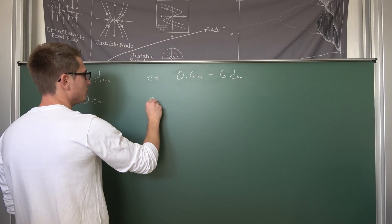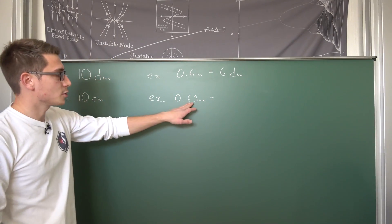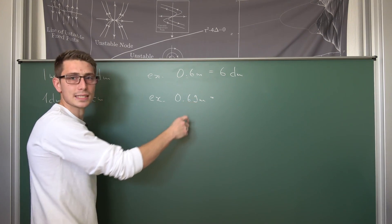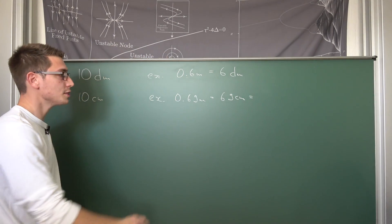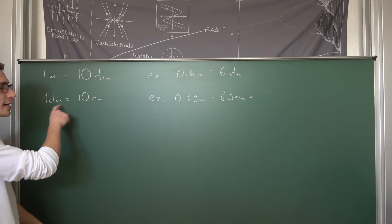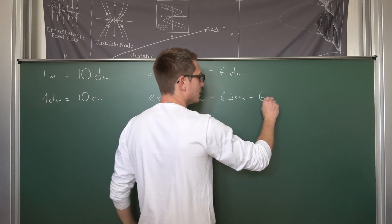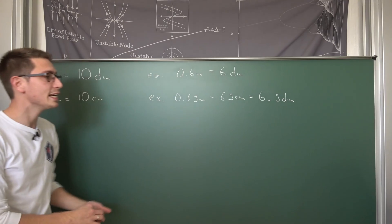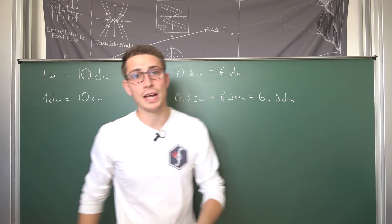For example, if you want to convert 0.69 meters, you know those are just 69 centimeters. We have 100 centimeters in one meter, so 0.69 meters equals 69 centimeters. Or putting it in other words: there are 60 centimeters in 6 decimeters and still a remainder of 9 centimeters, giving 6.9 decimeters. You can convert from decimeters to centimeters or the other way around by dividing or multiplying by 10, or go directly from centimeters to meters using a factor of 100.